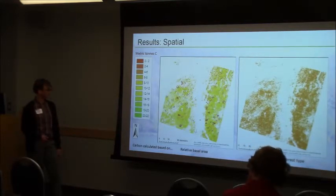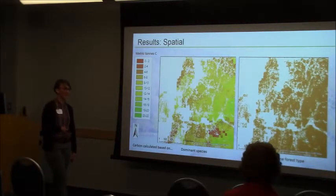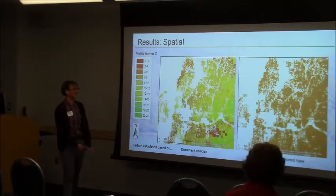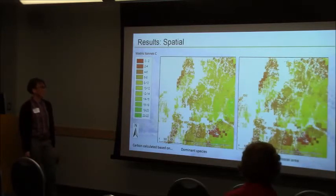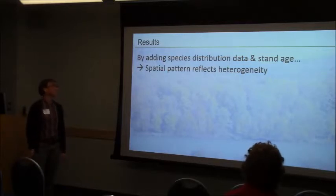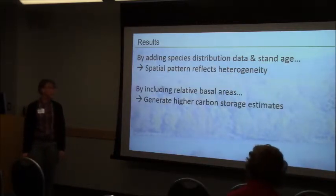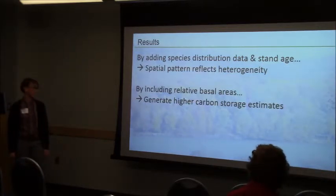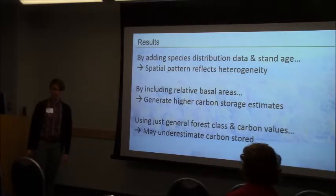Zooming in, with one forest type you get one carbon value across the entire landscape. When you include species information and stand age information, you get something that looks a little more representative of the northern forest. In general, adding species distribution information and stand age gives a spatial pattern that better reflects the heterogeneity of the northern forest. Including the relative basal areas generates higher carbon storage estimates, and using just a general forest class might be underestimating the amount of carbon stored at the landscape scale.